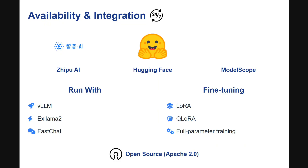Regarding availability and integration, both models are available on ZhipuAI and are open sourced, so you can find them on Hugging Face as well as ModelScope. For fine-tuning, both can be trained with LoRA and QLoRA, and they can run with vLLM, LLaMA.cpp, and FastChat.